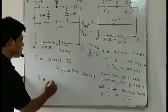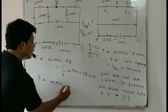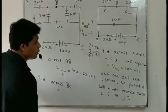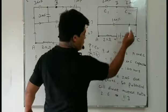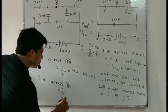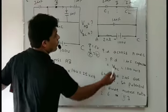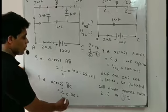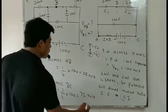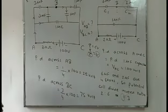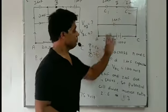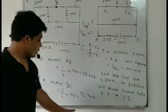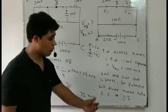Now, potential difference across BC: its potential ratio is 3, the total ratio sum is 4, and the total potential is 100 volts. So VBC = (3/4) × 100 = 75 volts. Therefore, potential difference across AB will be 25 volts and potential difference across BC will be 75 volts, on account of this inverse ratio.